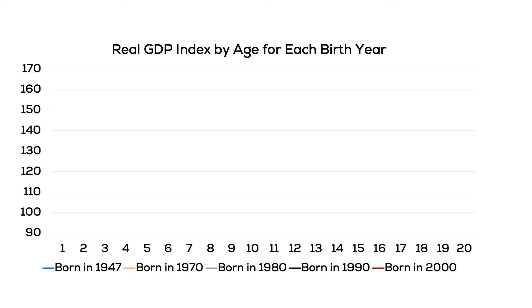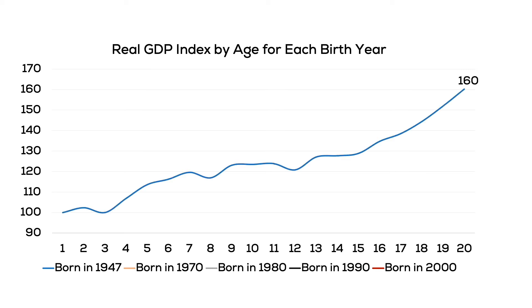Let's compare generations of people born in 1947, 1970, 1980, 1990, and 2000. We normalize the starting GDP for each birth year to equal 100 and follow GDP growth over the first 20 years of each cohort. A higher ending point indicates that birth cohort experienced a higher growth rate over the same period of time.